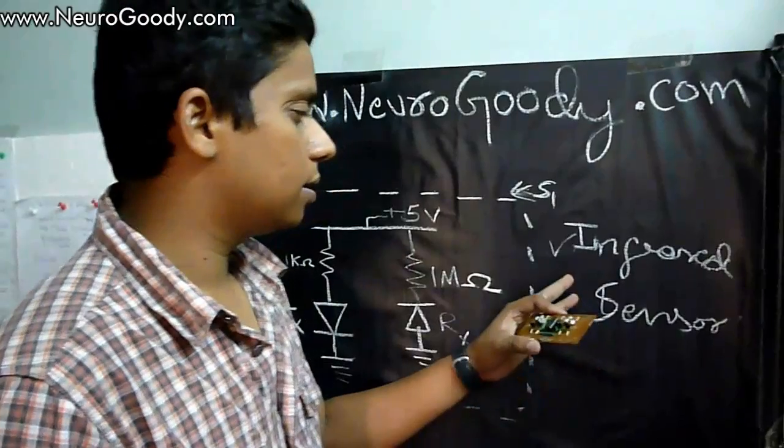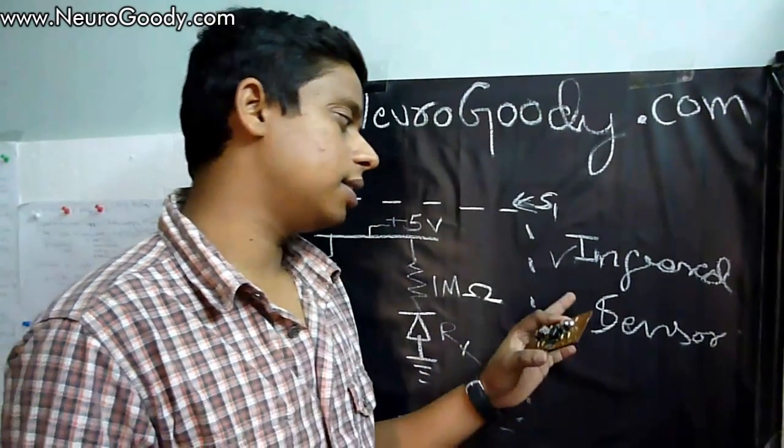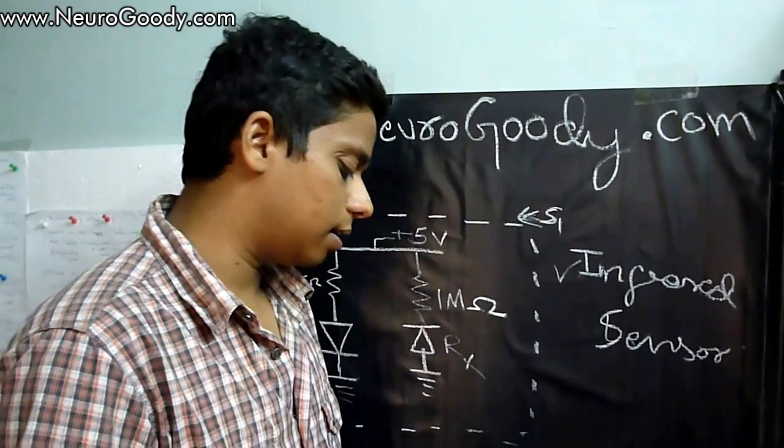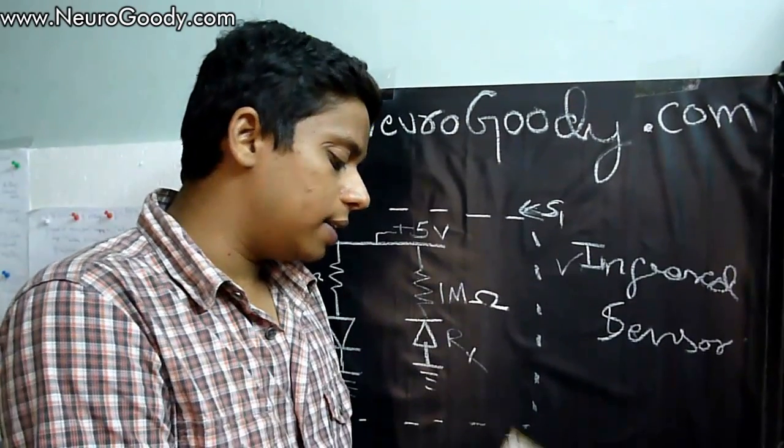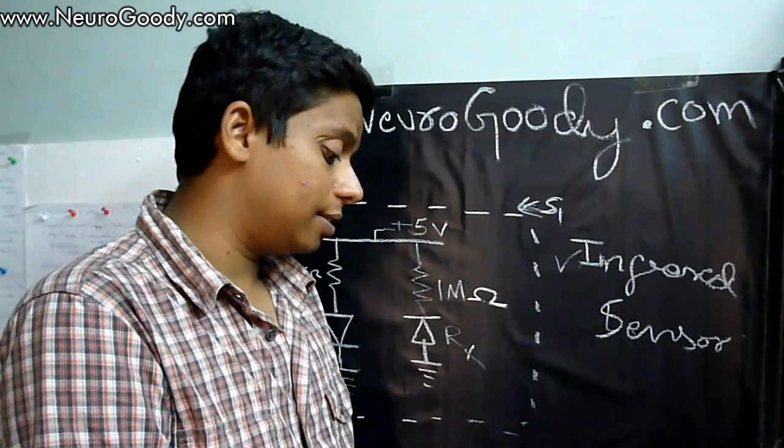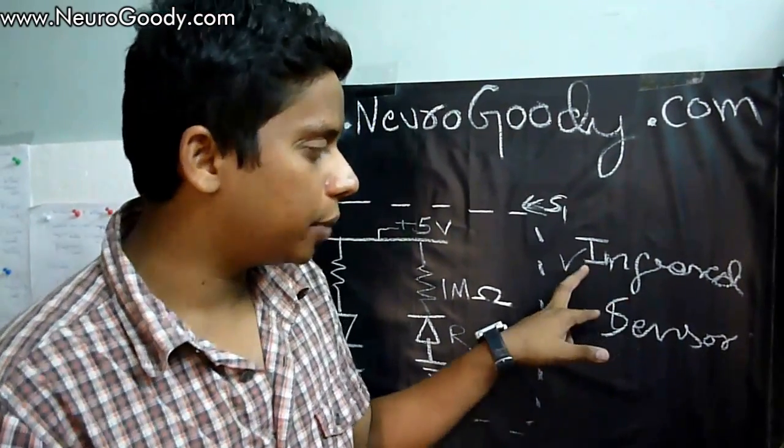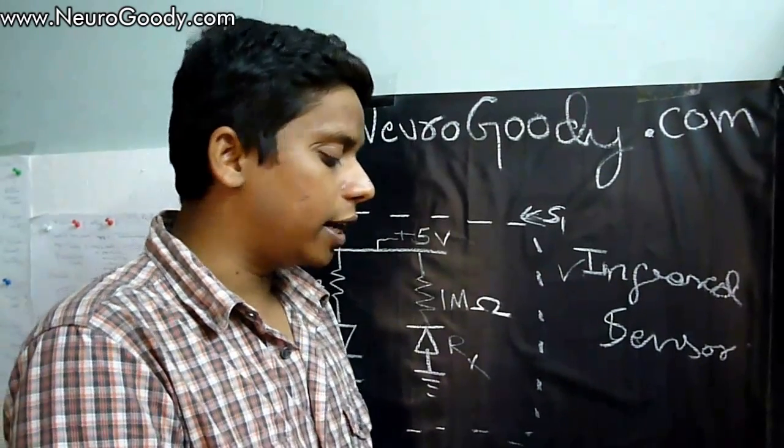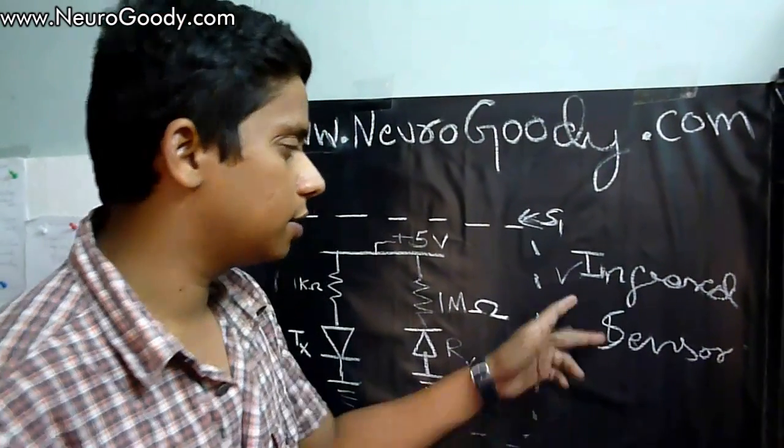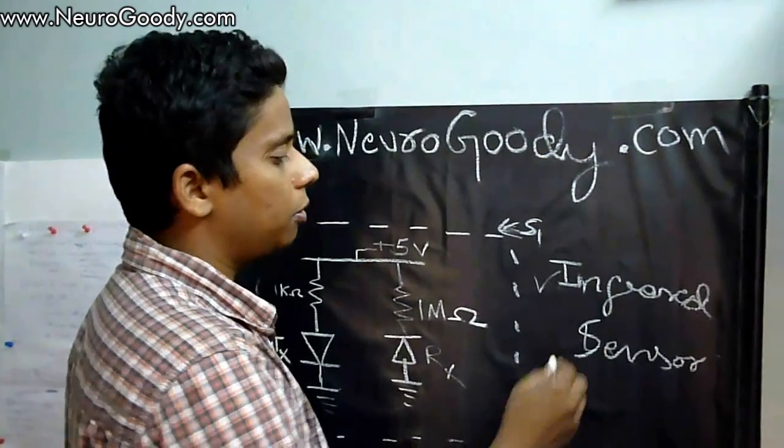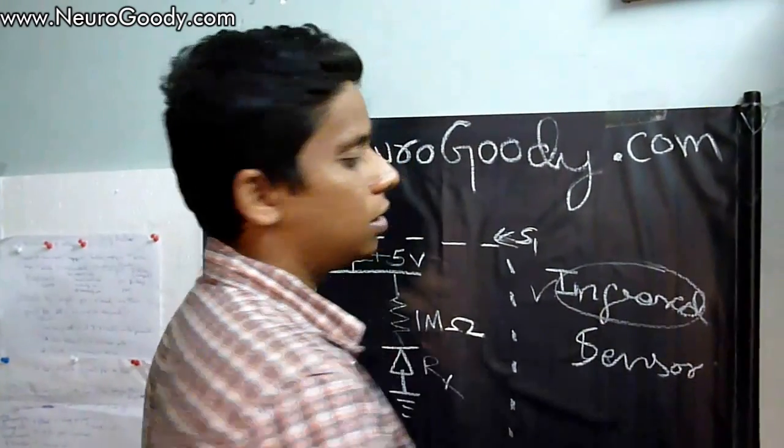This is the sensor which gives us the stimulus of whether our ground plane is a white surface or a black surface. It is the electronic component which differentiates between white and black surfaces and gives us stimulus.